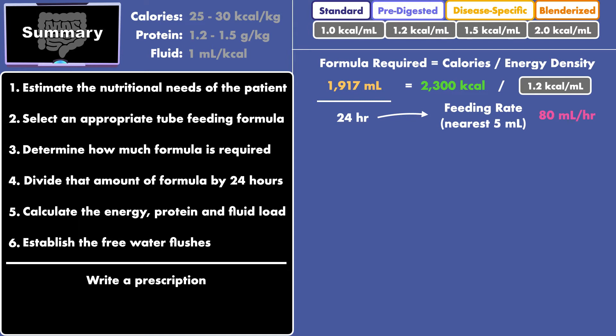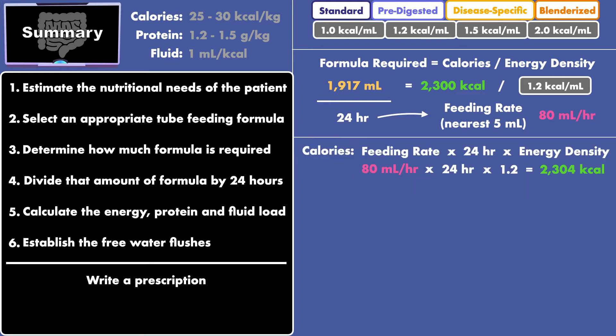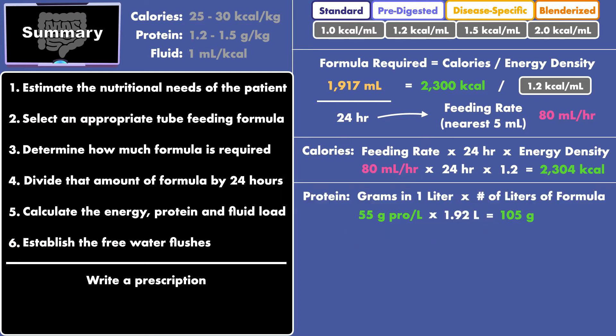At this stage, you calculate the energy, protein, and fluid load. For calories, multiply the feeding rate by 24 hours, and then multiply that result by the energy density. For protein, multiply the grams of protein in 1 liter of formula by the number of liters of formula given per day.